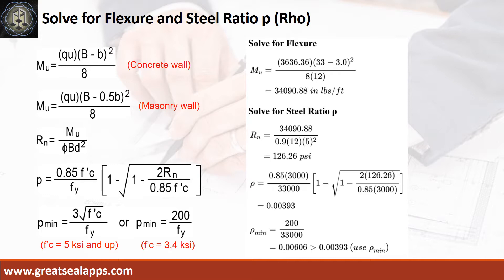The maximum moment is 34,090.88 inch-pounds per foot. Given resistance factor equals 0.9, B equals 12 inches, and D equals 5 inches, the beam design ratio RN equals 126.26 PSI, and reinforcement ratio Rho equals 0.00393.